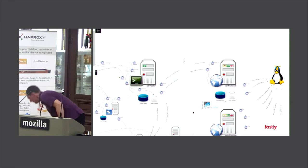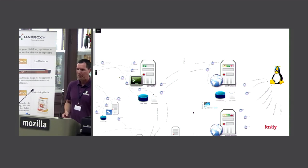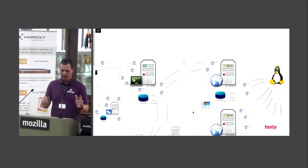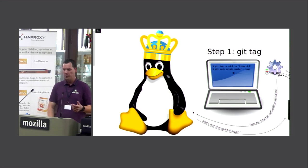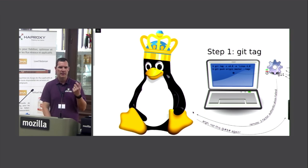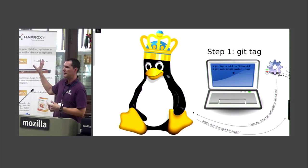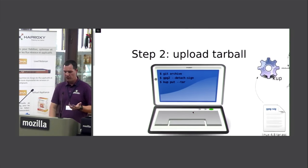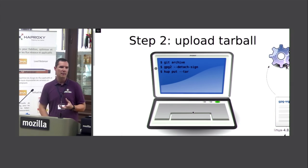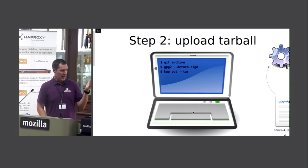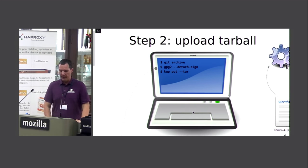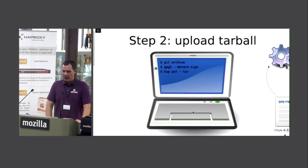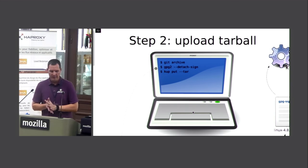Step one is complete: git tag has been submitted, propagated to master, propagated to the front ends, and developers are happy. Now we move to step two: uploading the tarball. We have a fairly interesting process here that many people are unaware of. How do we generate the tarball, how does it get uploaded, and how does it get out to everybody? It's essentially three main commands that Linus runs.